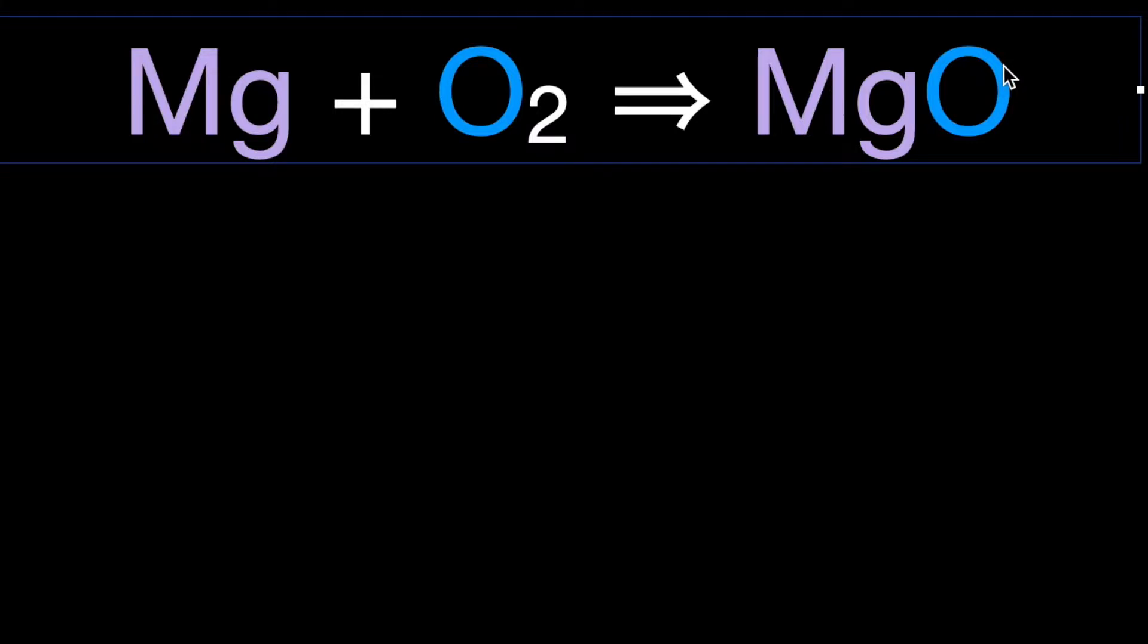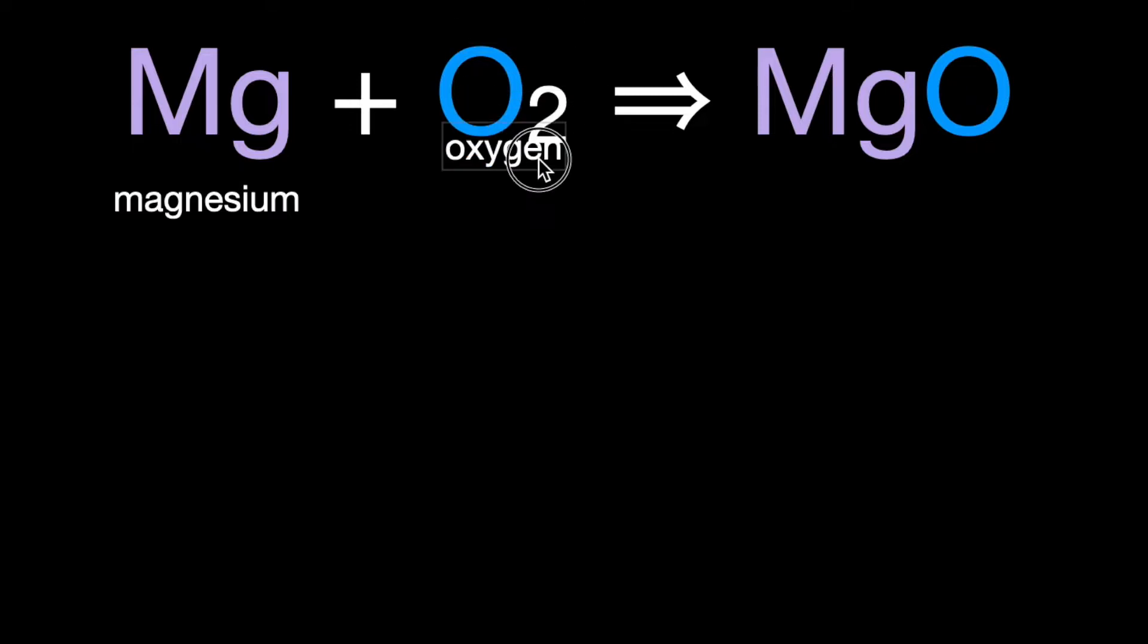Magnesium, Mg, plus O2 is going to give us MgO. Magnesium, oxygen, magnesium oxide.